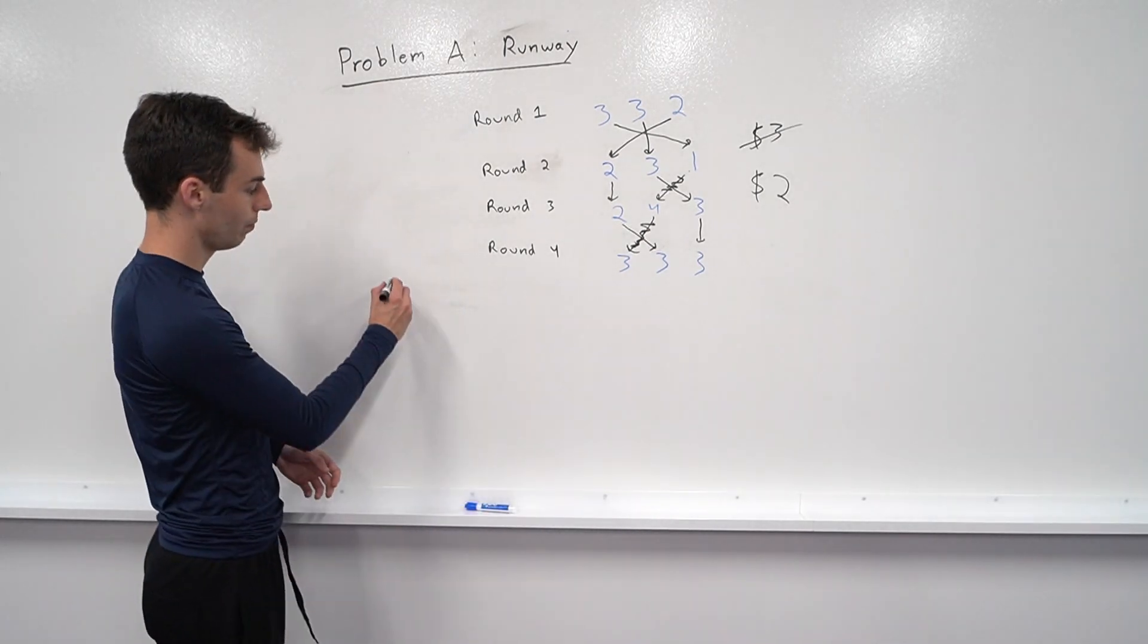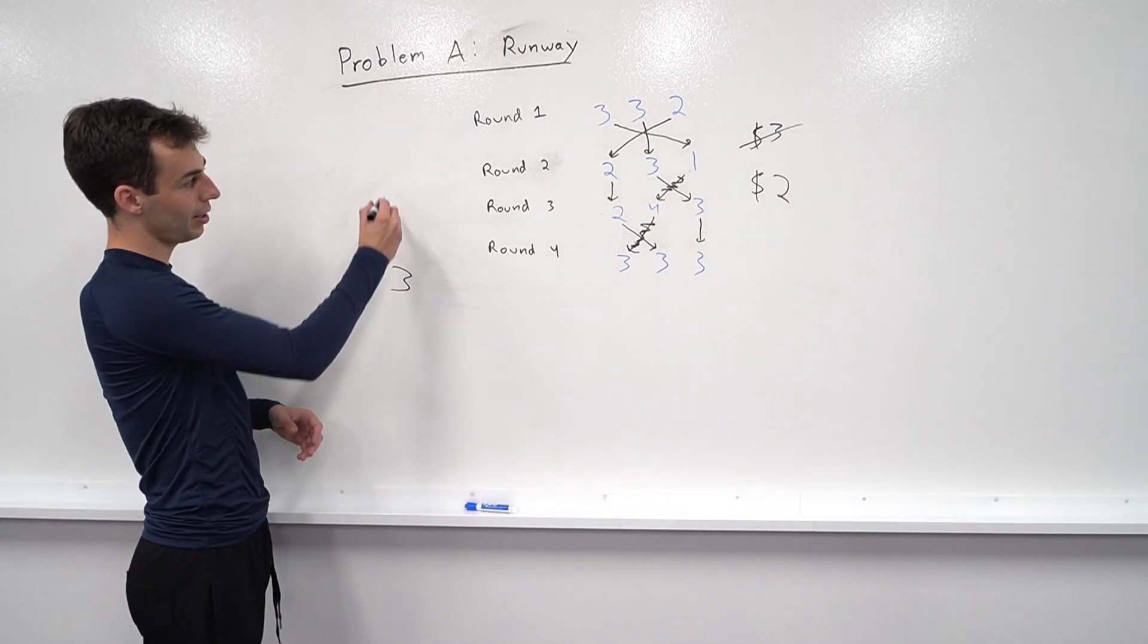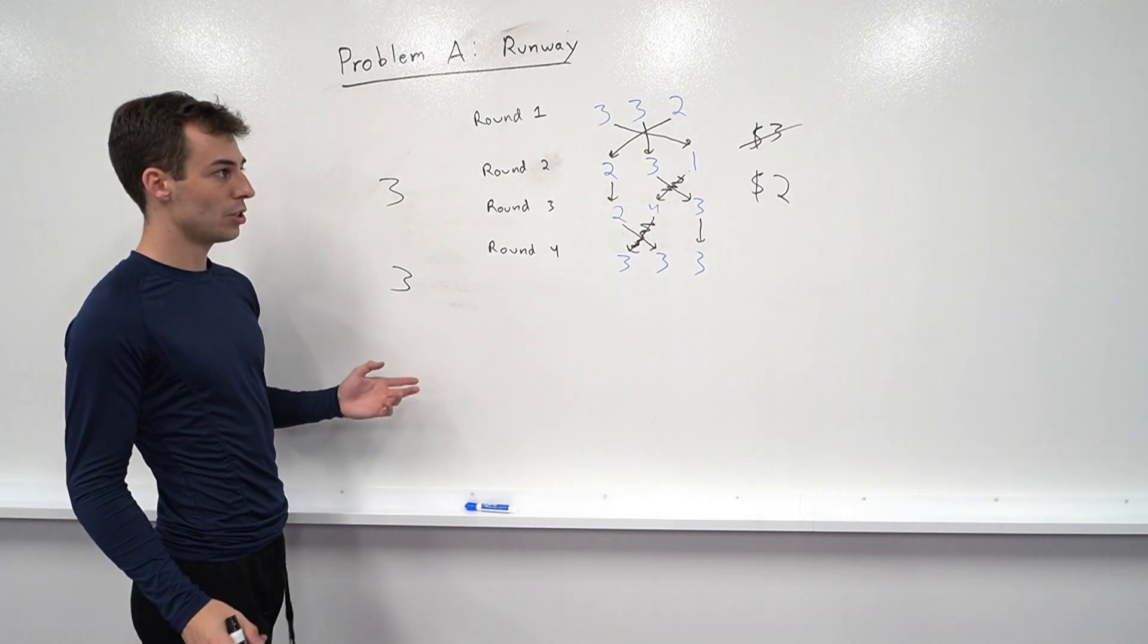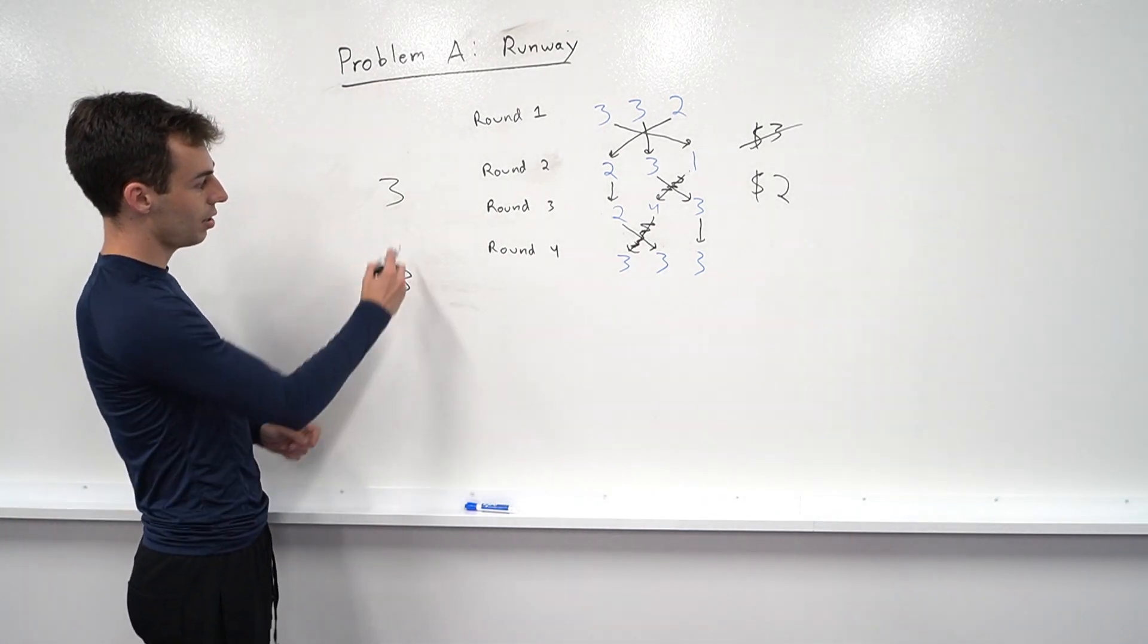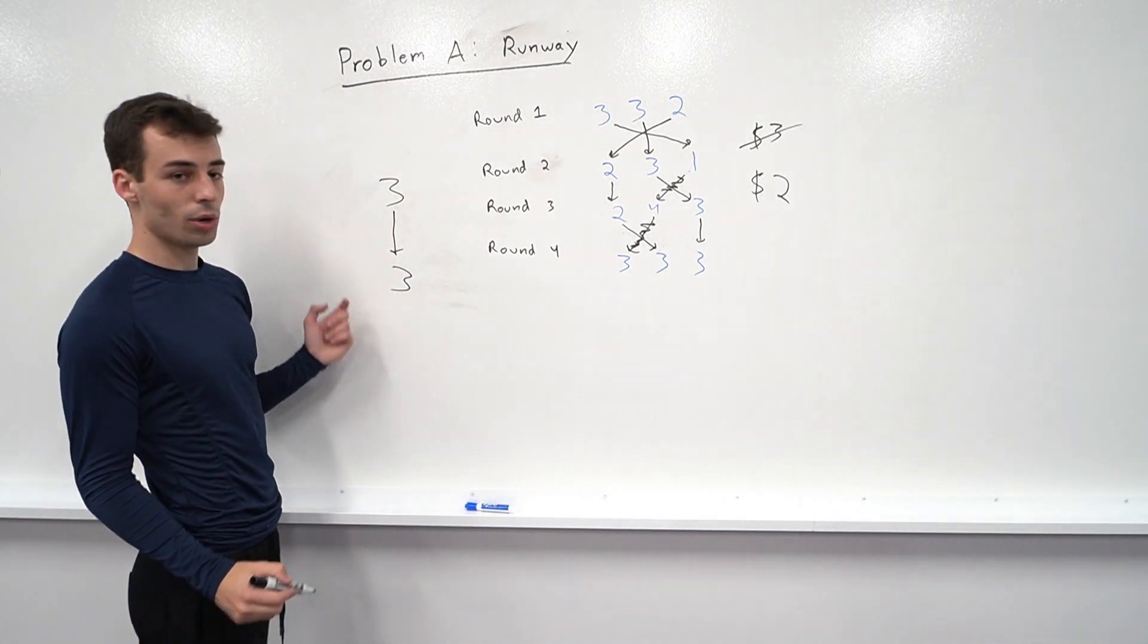So if you have a three and you have an unallocated three in the previous round, you might as well have this three go to that three if you only have one of each three.